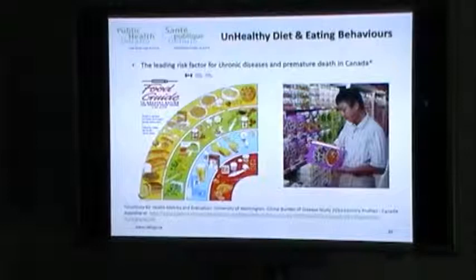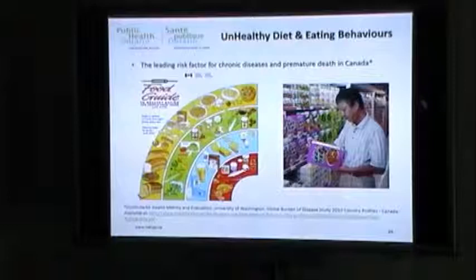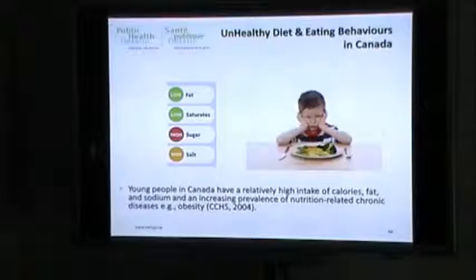I've talked a lot about physical activity, which was the focus of my PhD and fellowship work. Right now at Public Health Ontario, I've been doing a lot more in diet and food. Diet has been recognized as the leading risk factor for chronic diseases and premature death in Canada, according to the Global Burden of Disease Study from 2010. Canadian data shows young people have relatively high intakes of calories, fat, and sodium, and an increasing prevalence of nutrition-related chronic diseases such as obesity.